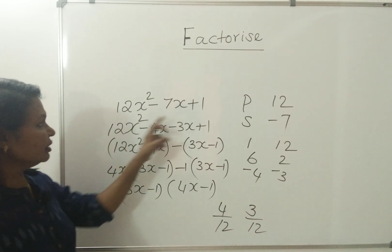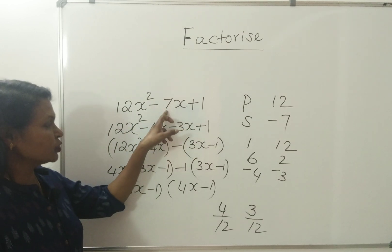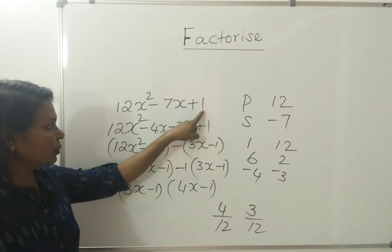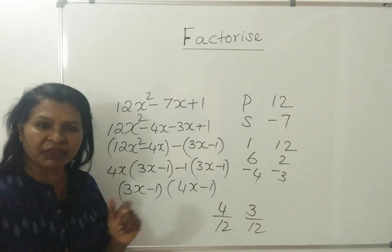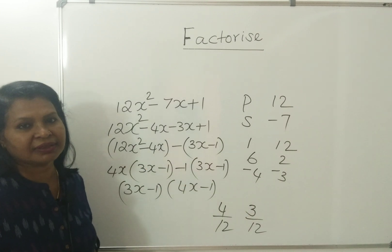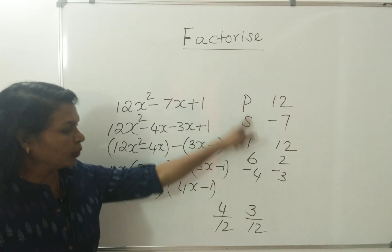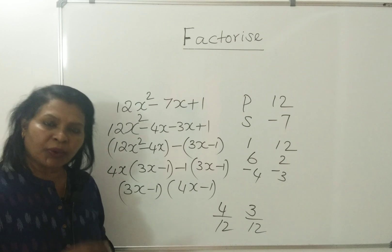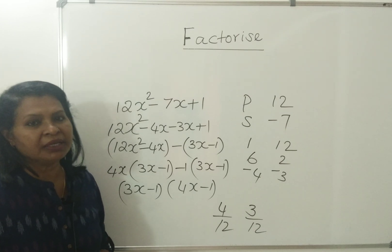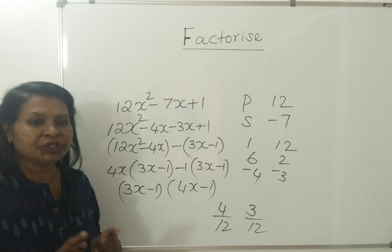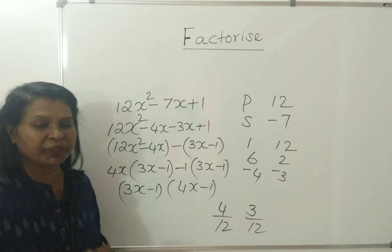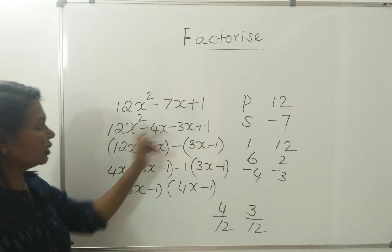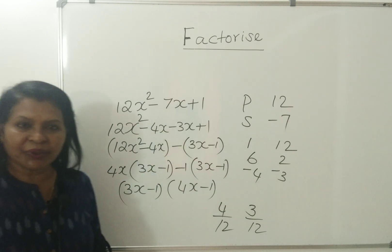MCQ question: let us discuss these factors using middle-term splitting. Sum is negative 7, product is 12. We need two factors. Product is positive and sum is negative, so both numbers will be negative. Negative 4 and negative 3. Correct?